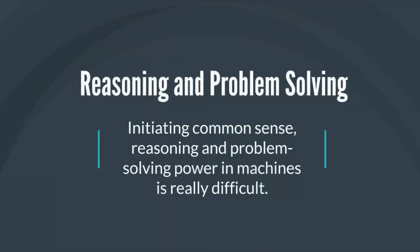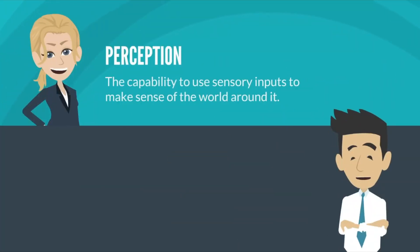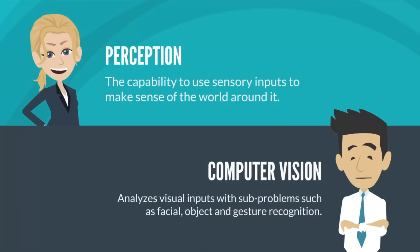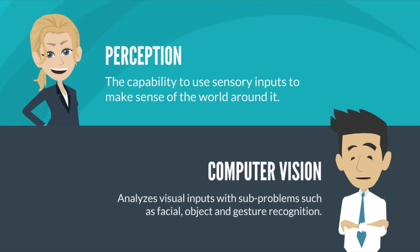Initiating common sense, reasoning, and problem-solving power in machines is really difficult. On one hand, you have machine perception — it deals with the capability to use sensory inputs to make sense of the world around it. Computer vision analyzes visual input with sub-problems such as facial, object, and gesture recognition.